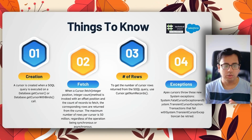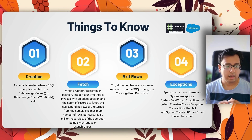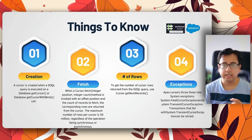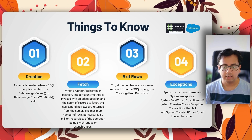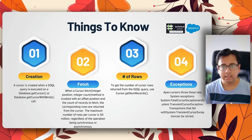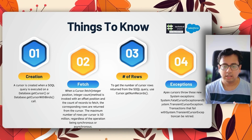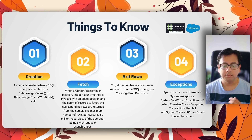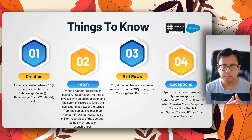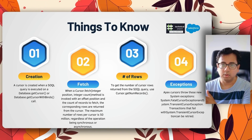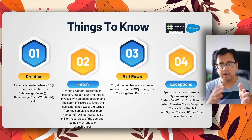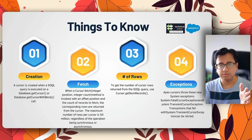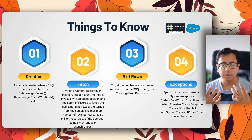So how can we create an Apex Cursor? A cursor is created when a SQL query is executed with the database.getCursor or database.getCursorWithBinds call — these are the two methods used to create the cursor. Once the cursor is created, data is fetched using cursor.fetch, a method that takes two parameters: position, which is an integer value representing the starting point, and count, which is how much data to retrieve from that position — essentially your manageable chunk.